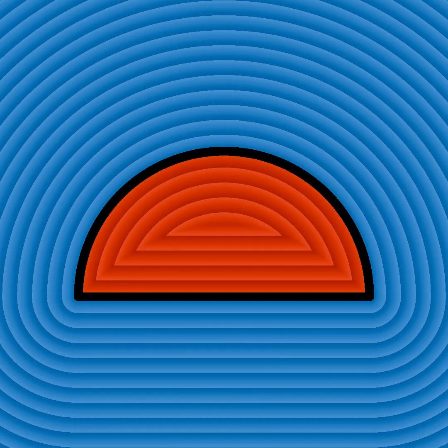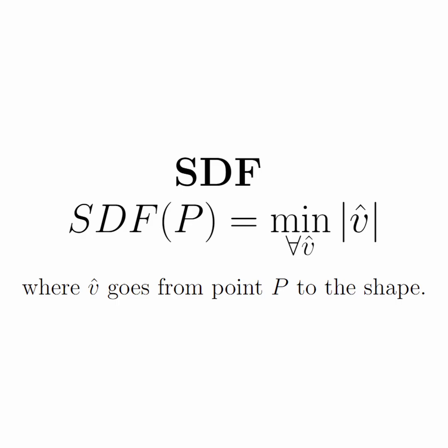And without even knowing what this means, I think you can tell what a valid SDF looks like and an invalid one. You can just kind of tell that one of these doesn't look right. Well, here is what an SDF is. It is a special function that tells you how far away from a shape you are at every single point.